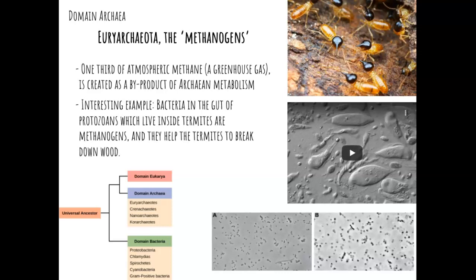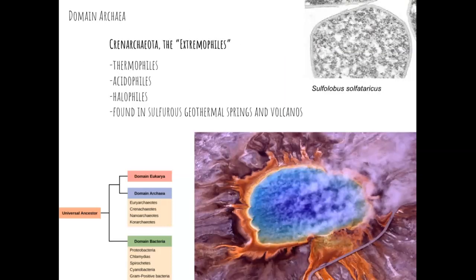The termite eats wood. Inside the termite's gut are protozoans, but the protozoans also can't digest that wood material. So the protozoans consume it, and inside the protozoans are methanogens that consume the wood material — it's almost like Russian dolls, where one is smaller inside each of the other. The second type of archaea are the Crenarchaeota, or extremophiles. As the name implies, these live in extreme environments: thermophiles in very hot environments, acidophiles in very acidic environments, and halophiles in very salty environments. We would find these mostly in sulfurous geothermal springs and volcanoes, such as Yellowstone National Park.